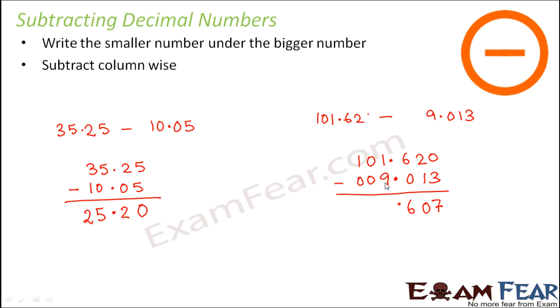Again here, you borrow 1 from this side, so this becomes 11. 11 minus 9 would be 2. This becomes 0 because you had borrowed 1 here, so here it is 10. 10 minus 1 would be 9. Again you give back that 1, so here it is 0. So the result would be 92.607.